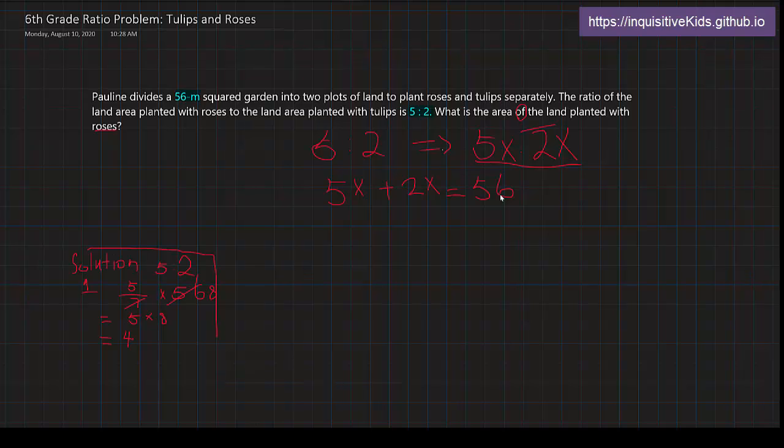Now, all we have to do is simplify. First, we combine like terms. 5 of something called x plus 2 of the same thing called x is going to give us 7 of that same thing called x. So, 7x equals 56. And then we divide by 7 on both sides, and x is left all alone on the left side of the expression. We also divide by 7 on the 56, which gives us x equals 8.